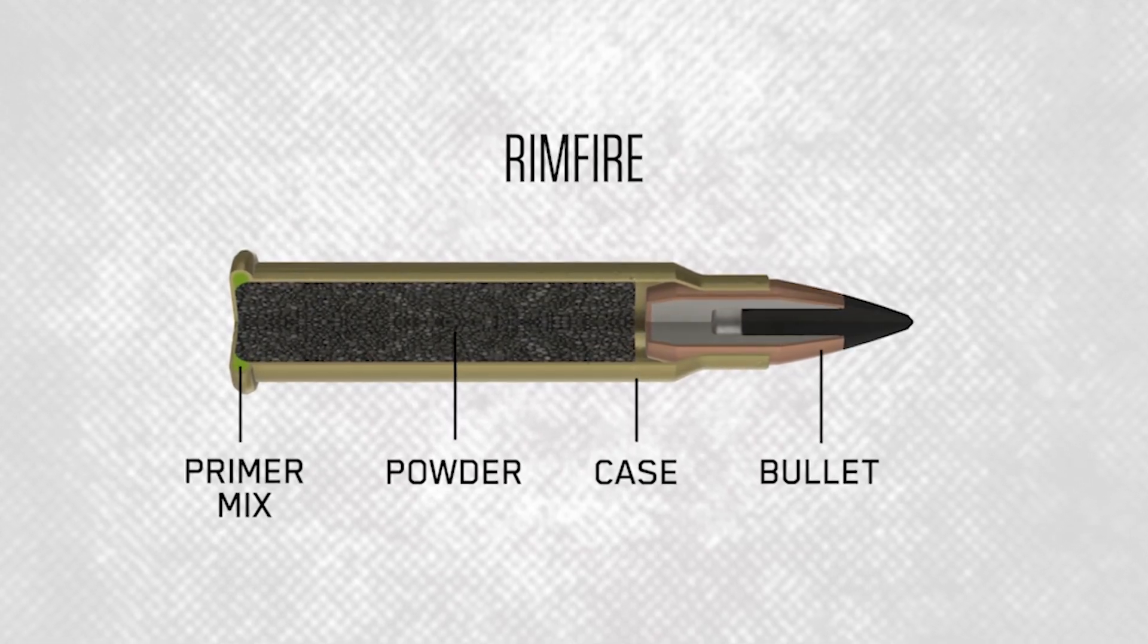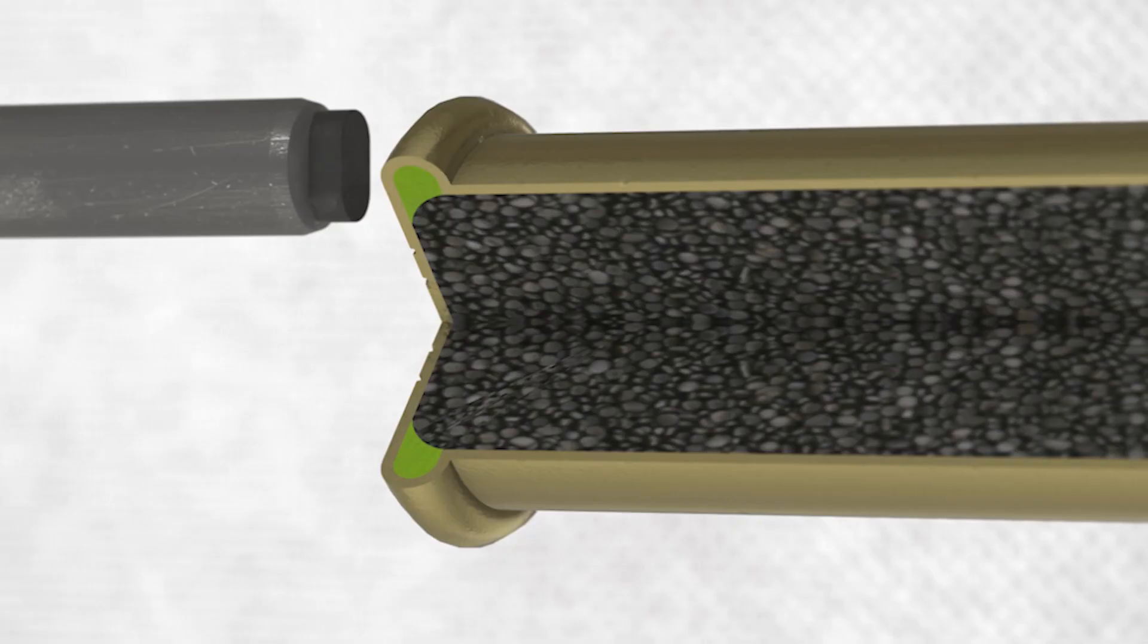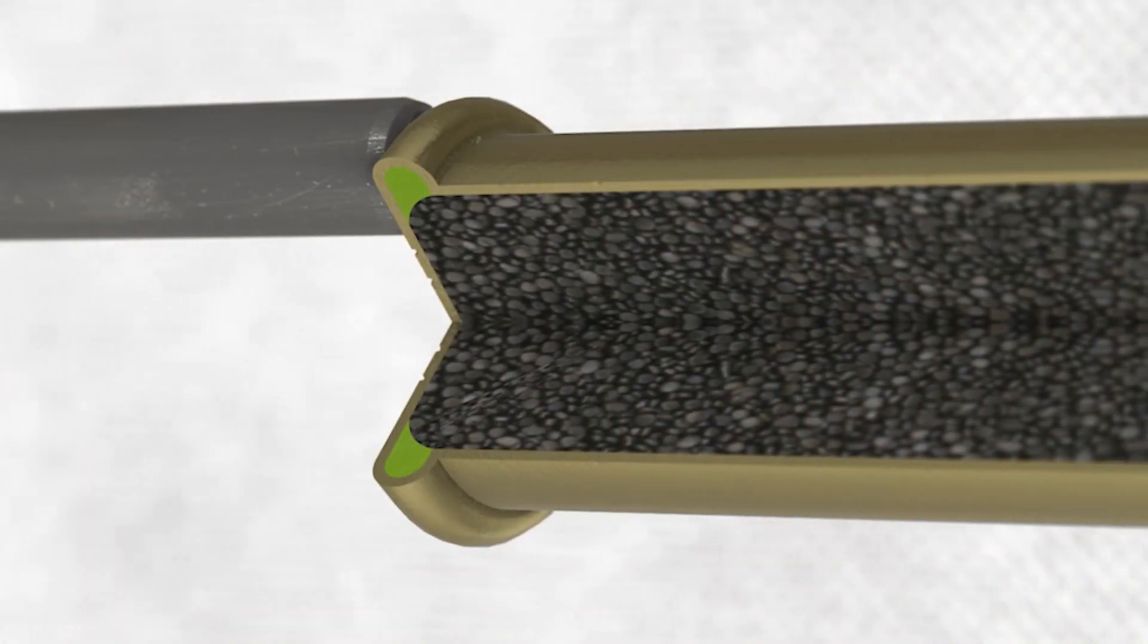Rimfires have primer mix located in the rim of the case and it's ignited when the firing pin strikes the rim and creates a small spark.